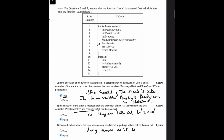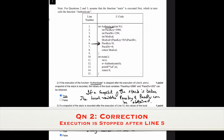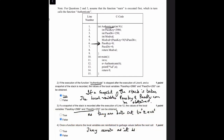Question 2: in the execution of the function authenticate, if execution is stopped after line 6 and a snapshot of the stack is recorded, the values of local variables passkey and passdiv can be obtained. Since a snapshot of the stack is taken, the values of these local variables can be obtained, so this is true.